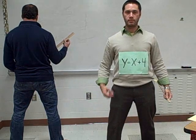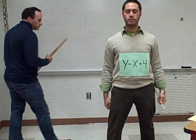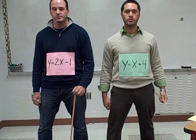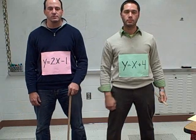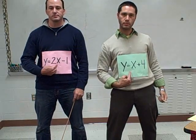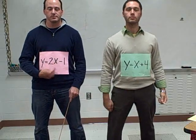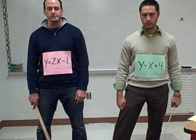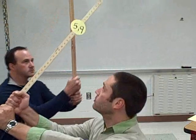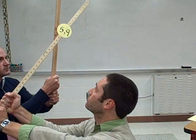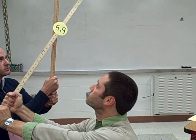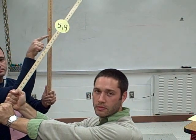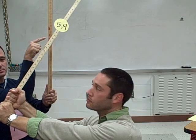y equals x plus 4 and y equals 2x minus 1 — a different y-intercept and slope for each equation. See where the two lines cross and what's in common, to pick 5 comma 9 as the solution.